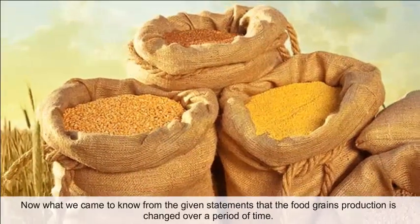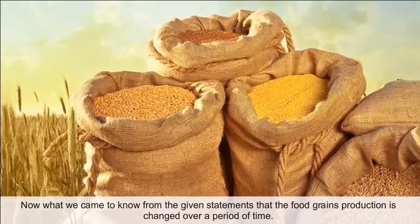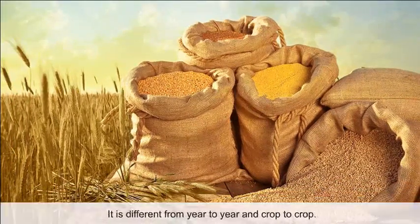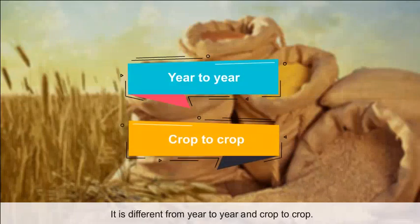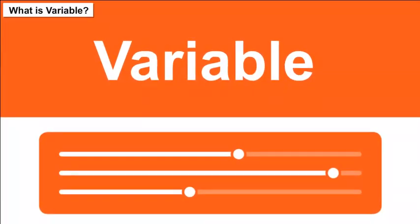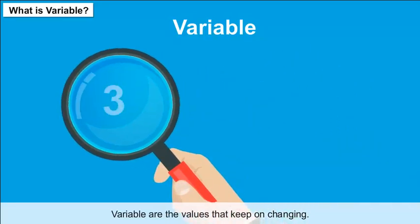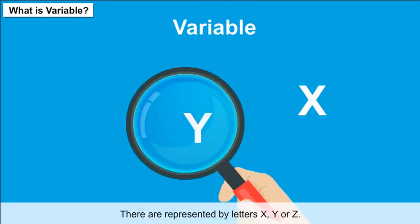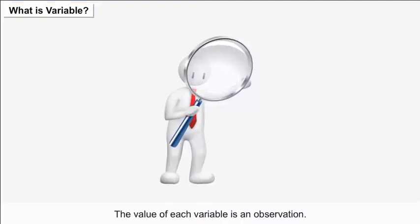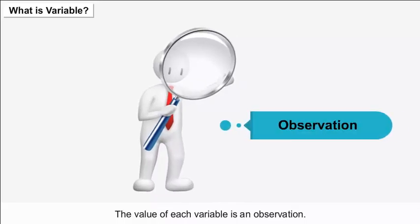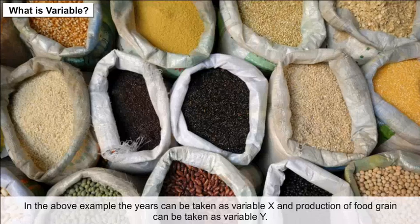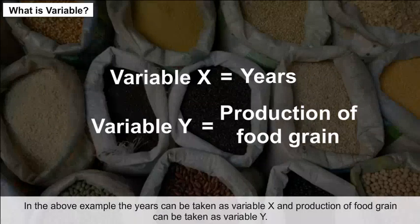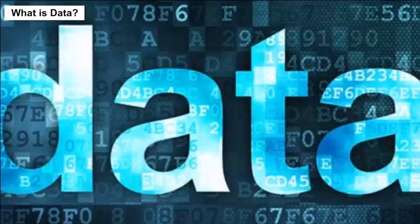From these statements, we know that food grain production changed over a period of time — it is different from year to year and crop to crop. What is a variable? Variables are the values that keep on changing. They are represented by letters X, Y, or Z. The value of each variable is an observation. In the above example, years can be taken as variable X and production of food grain as variable Y.